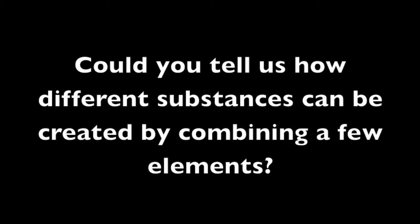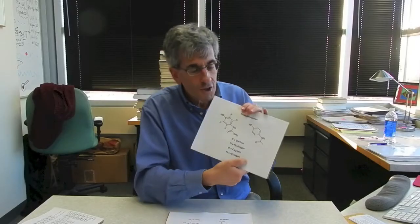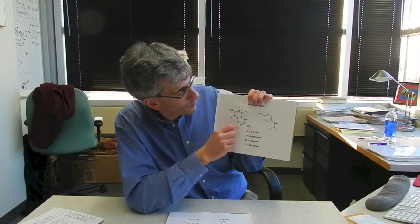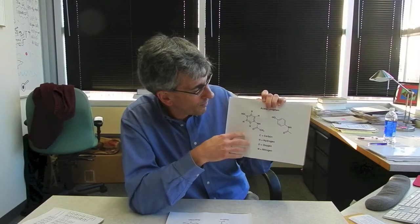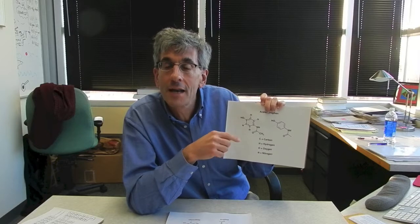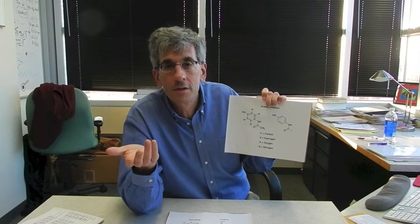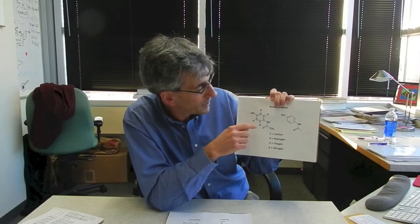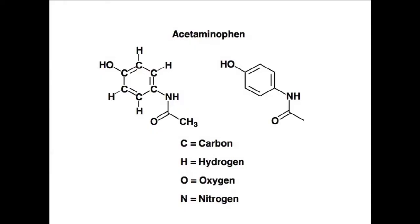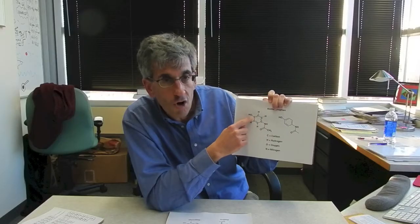Most of the stuff in the world around us is made up of a relatively small number of elements. Here's the way we draw a molecule, or indicate the structure in cartoon form — the molecule we call acetaminophen. This is Tylenol. Probably you've all taken it at some point or another, and it's made up of just four elements: carbon, hydrogen, oxygen, and nitrogen. One way to indicate the structure is drawn here.